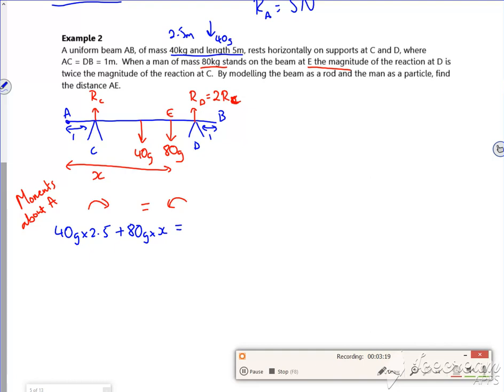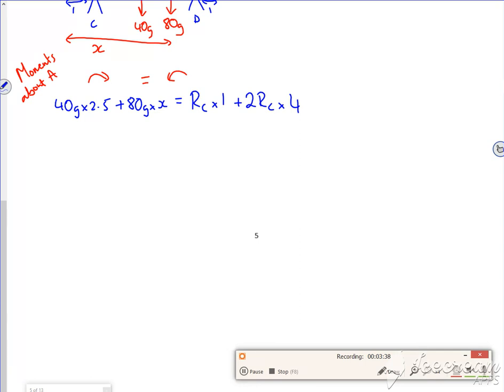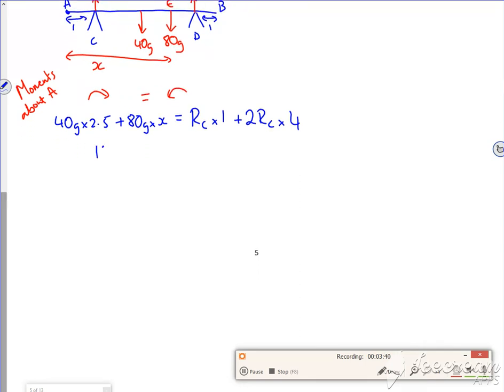So that's RC, and that's times by 1 metre. Plus RD, which is 2 lots of RC, times by, now the distance from A to D is 4 metres.